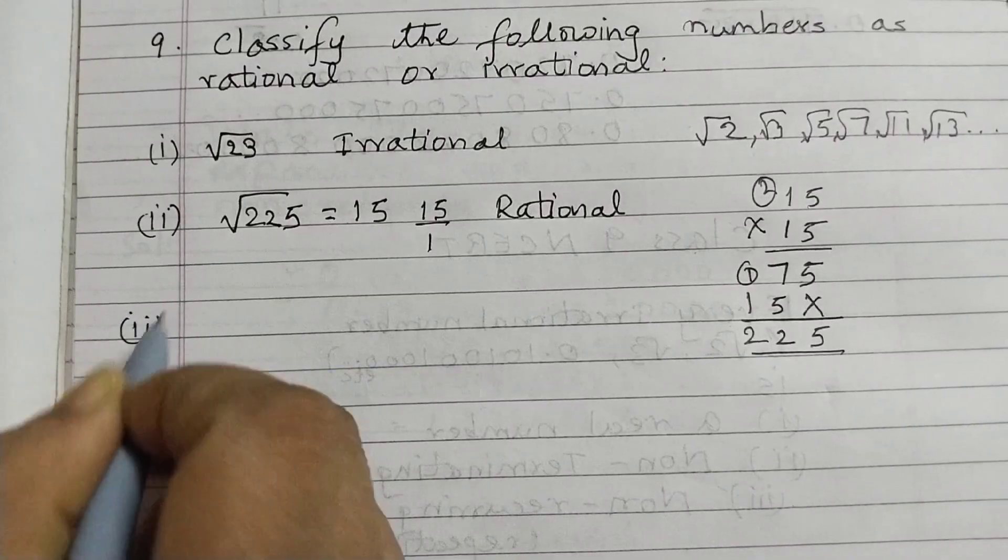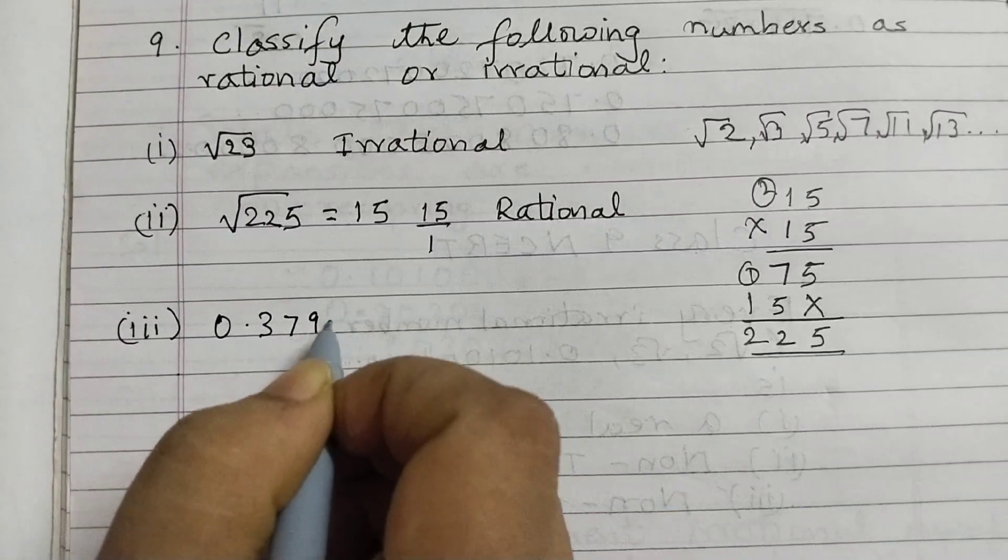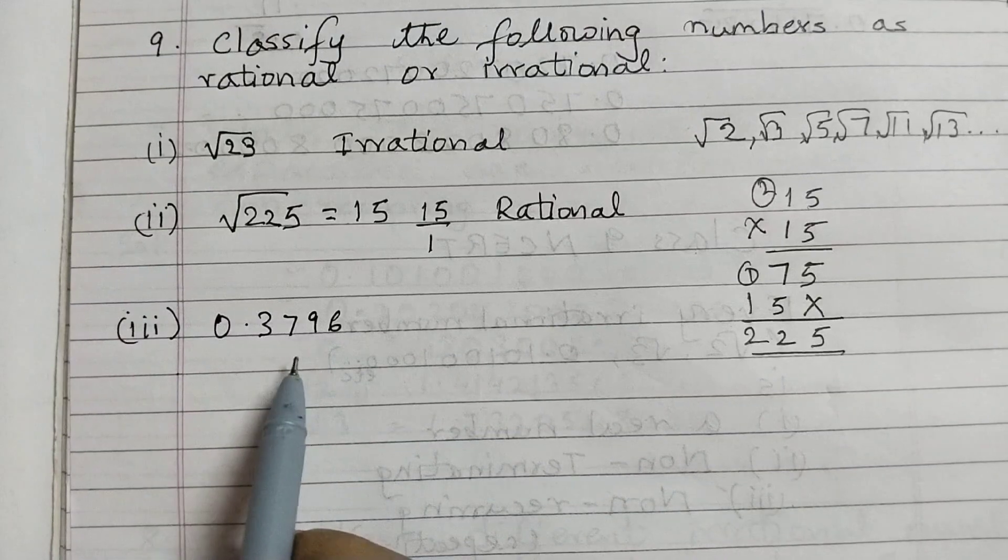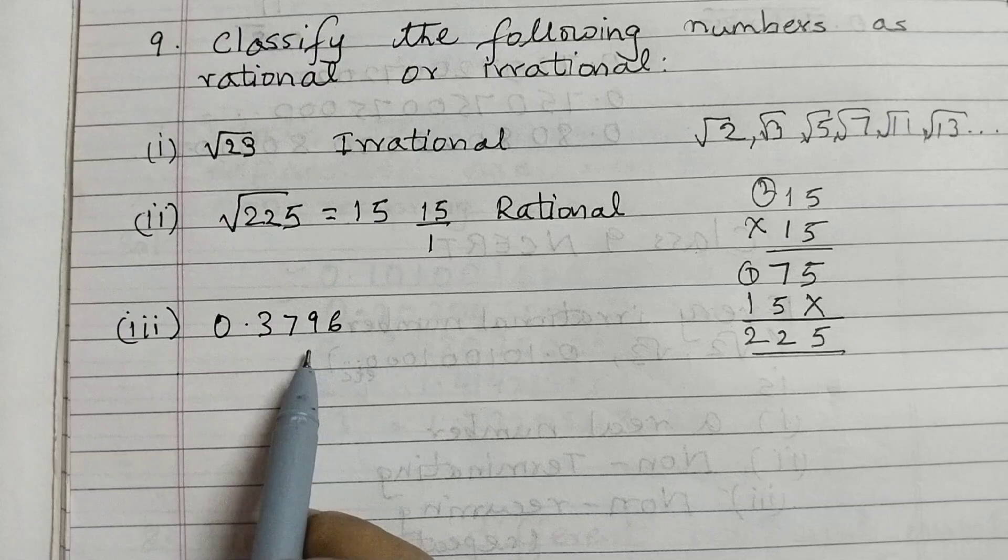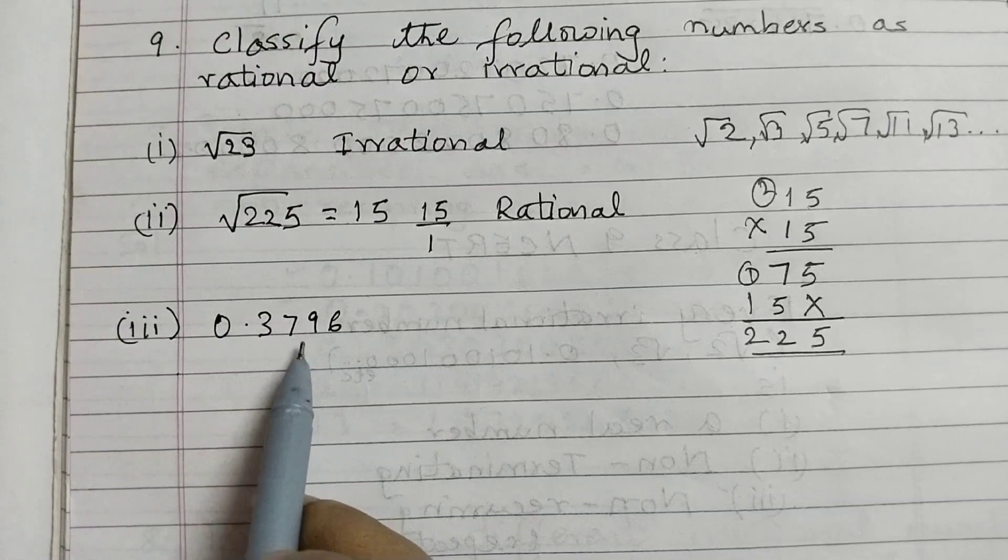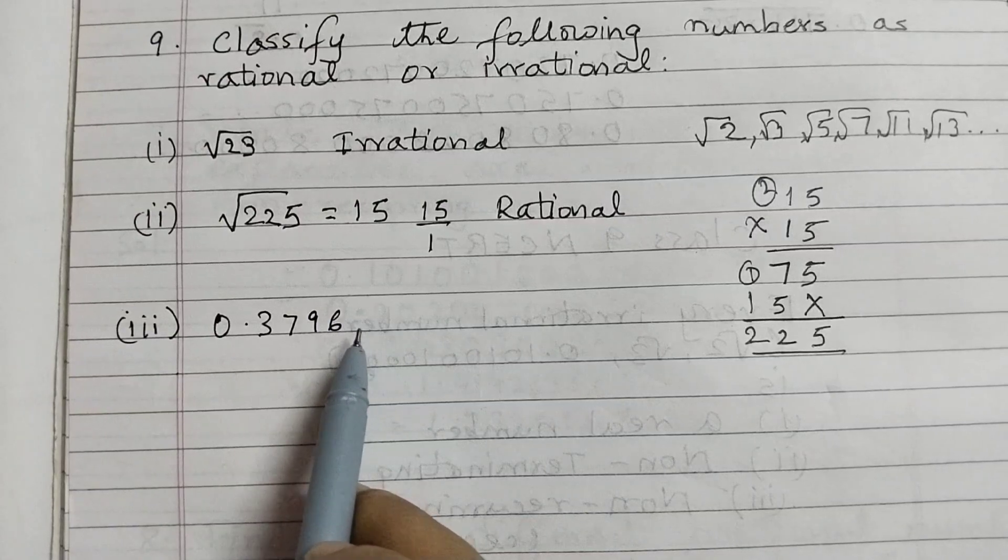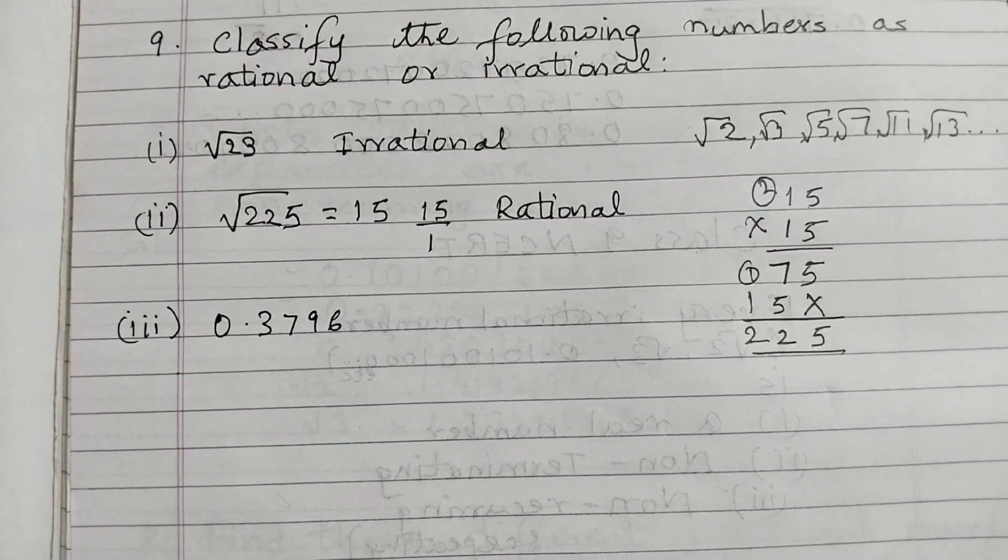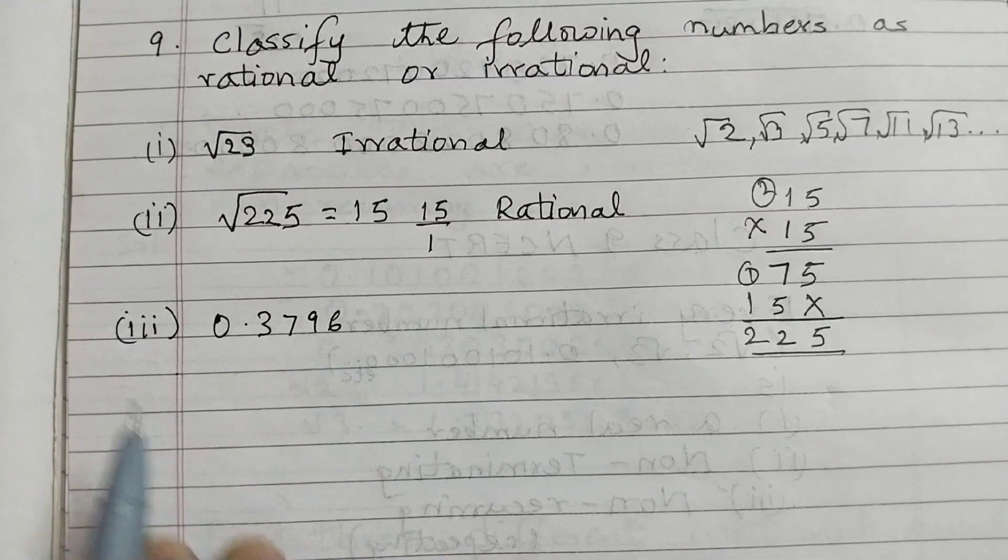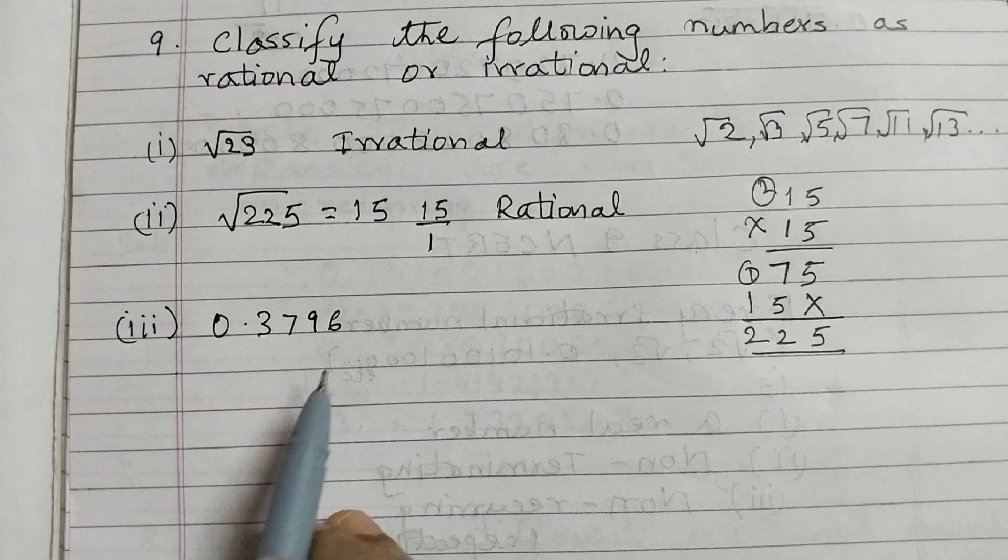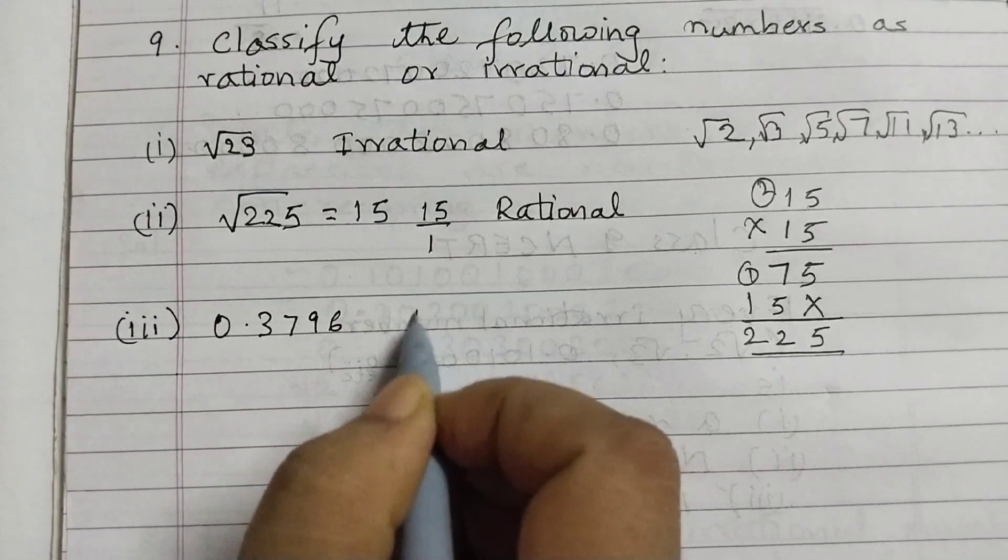Third one, 0.3796. This is a decimal number and it has 4 digits after the decimal point: 3, 7, 9, 6 and it stops here. The division stops here. We don't have any dot dot dot. When you have those 3 dots, it means the division goes on forever. Here we don't have any digit after 6, that means the division is complete. So this is a terminating decimal expansion, which means it's a rational number.